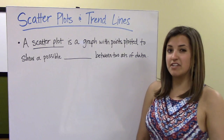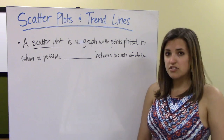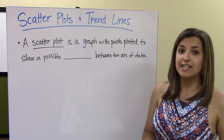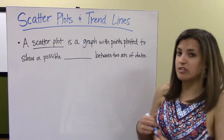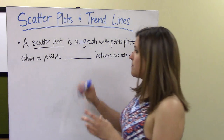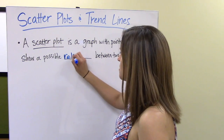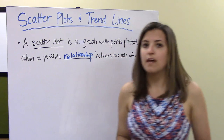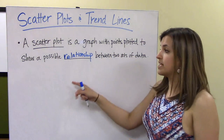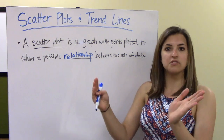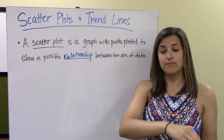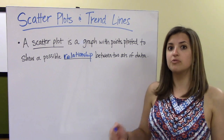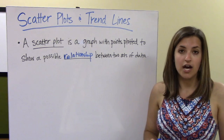Let's get some definitions underway first. A scatter plot is basically just a graph with points plotted on it to show a relationship between two sets of data. When you plot two different sets of data, sometimes they're correlated — as one goes up the other goes up, or as one goes down the other goes down. But sometimes they're not, and a scatter plot can be a good way to visualize whether this is happening or not.